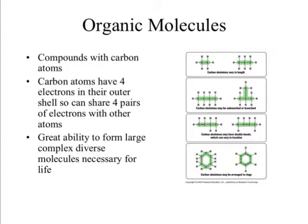An organic molecule is just a molecule that has carbon in it. And if you remember from general chemistry, carbon has four valence electrons, so it can make four bonds in order to fill its valence shell. It's super versatile in that it can have four different atoms attached to it at the same time, giving carbon a great ability to form large, complex, and very diverse molecules that are necessary for life.